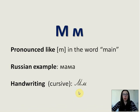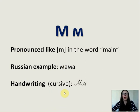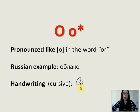М is pronounced like M in the word 'main.' Russian example: 'мама,' which of course means mother. And you can also see the handwriting.